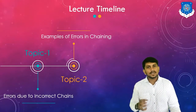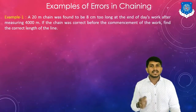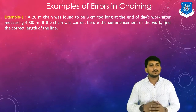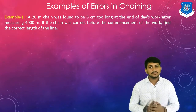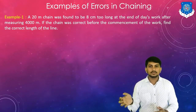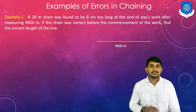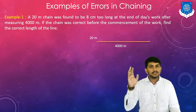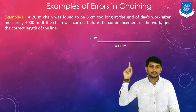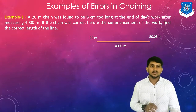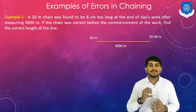Now let's discuss the second topic of today's lecture: examples of errors in chain. First example: a 20-meter chain was found to be 8 centimeters too long at the end of a day's work after measuring 4,000 meters. If the chain was correct before commencement of work, find out the correct length of the line. The distance is 4,000 meters. At the start, the chain was correct, so its length is 20 meters. At the end, the chain was 8 centimeters too long, so the length of the chain at the end is 20.08 meters.